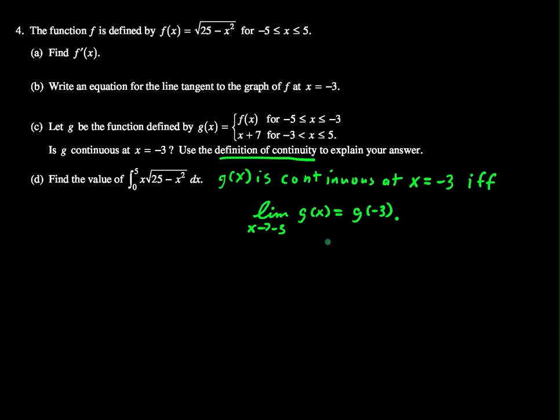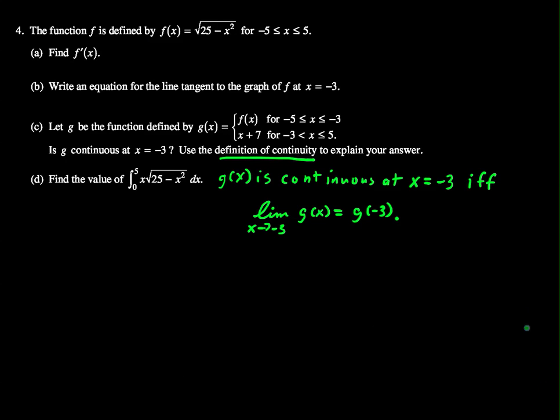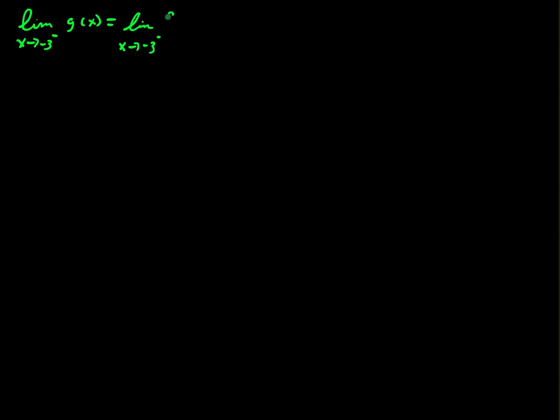Okay, so we'll start by looking for the limit and it's a piecewise function. So I'm going to actually look at a left-hand limit and a right-hand limit. The limit as x goes to negative 3 from the left of g of x will equal the limit as x goes to negative 3 from the left of f of x, 25 minus x squared. So that will equal f of x, which equals f of negative 3. We figured this out in part b, that's equal to 4.